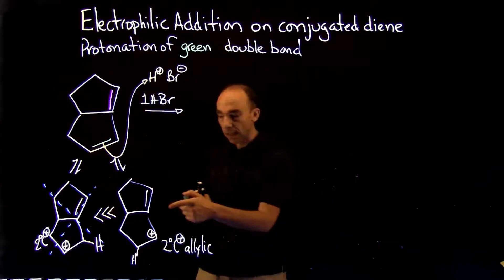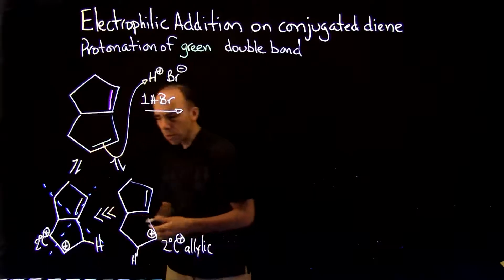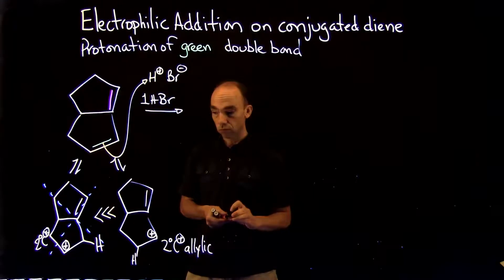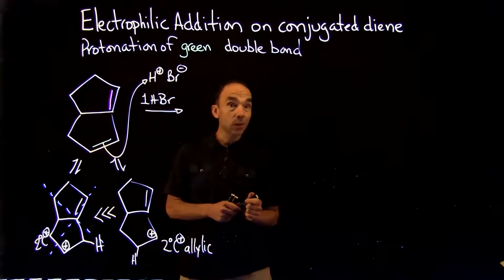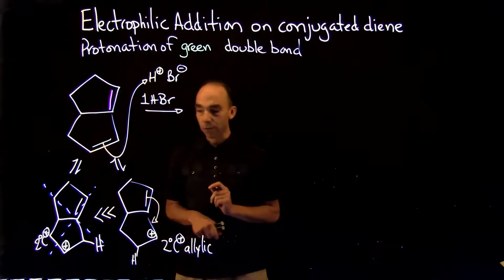So we can continue the mechanism with the secondary allylic carbocation, being more stable than the secondary, not allylic carbocation. Because it's secondary and it's allylic, there is possibility of resonance.